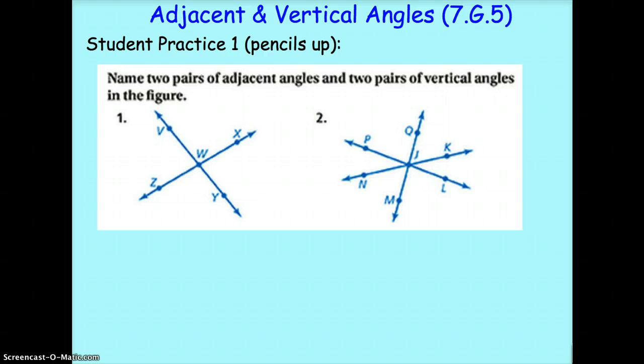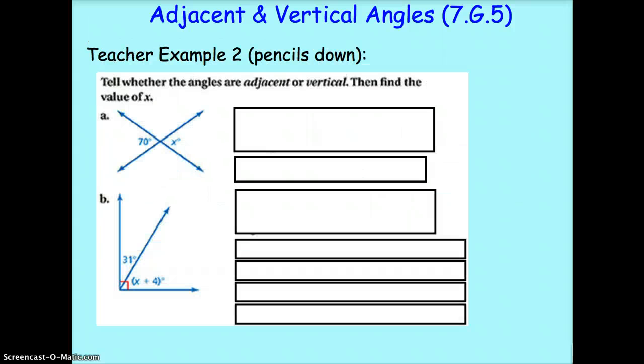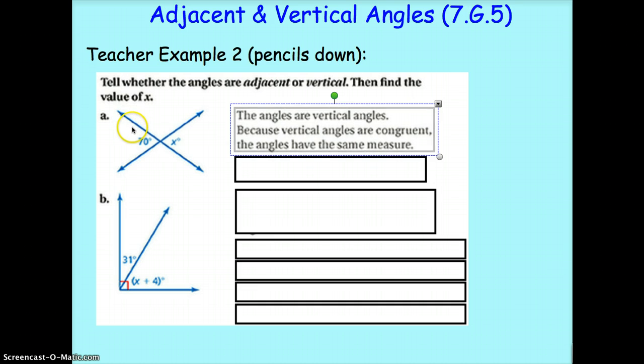If not, you do want to go back and re-watch teacher example one. Okay, let's go on to teacher example two. Tell whether the angles are adjacent or vertical and find the value of X. So what we're looking at are these two angles, 70 and X. Are they adjacent or vertical? Obviously, they are not sharing a side, so they cannot be adjacent angles. And they are, in fact, vertical angles. Okay, now because they're vertical angles, it means they have the same measure. So if this angle is 70, this angle X must also be 70.